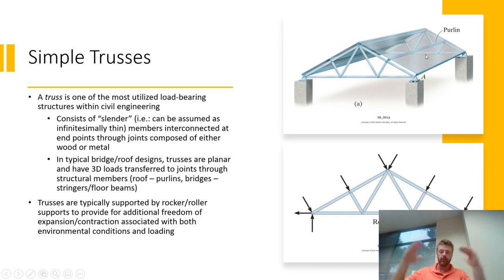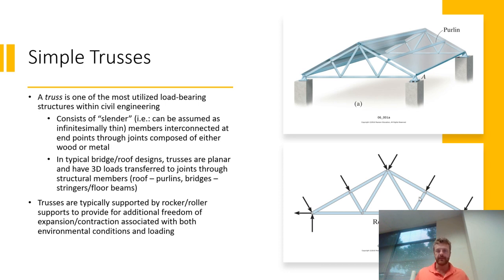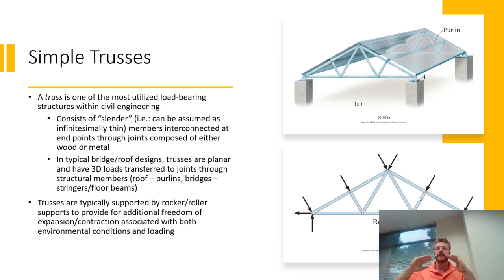What that purlin is doing is taking all of the weight of the roof and transferring it to the joints of the truss. What they're trying to emphasize here is that when we do analysis problems in this section and we have something that looks like the figure in the lower right, that would actually correspond to a real physical use case where we have a three-dimensional scenario and these trusses sit across sections with some type of additional structural element transferring the load to the joints.